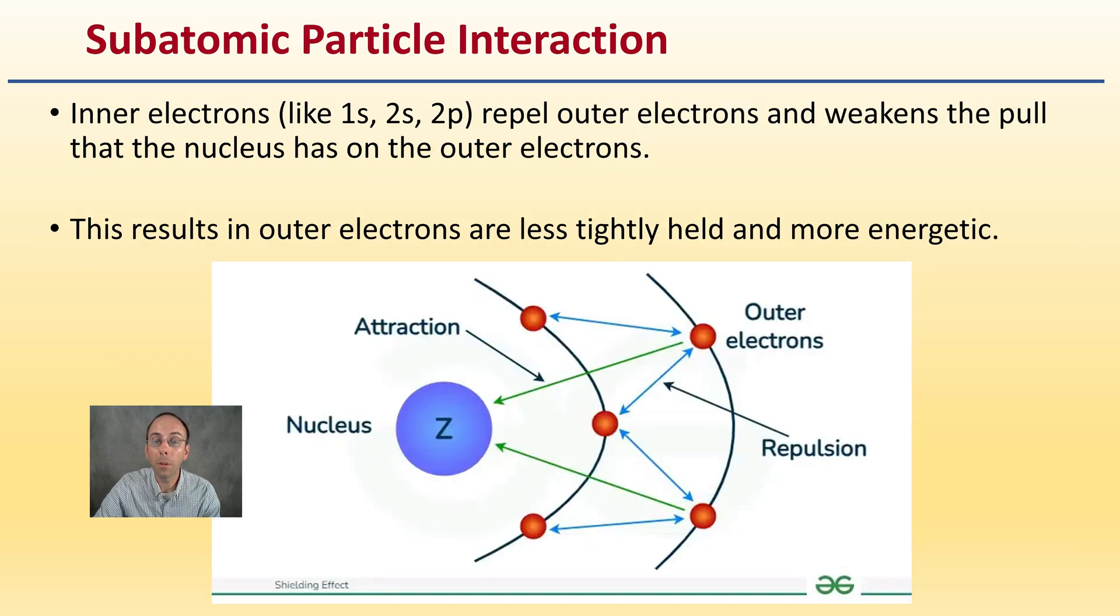This subatomic particle interaction that's going on here, we're kind of zoomed in on a portion. Inner electrons like the 1s, 2s, and 2p repel outer electrons and weaken the pull that the nucleus has on those outer electrons.